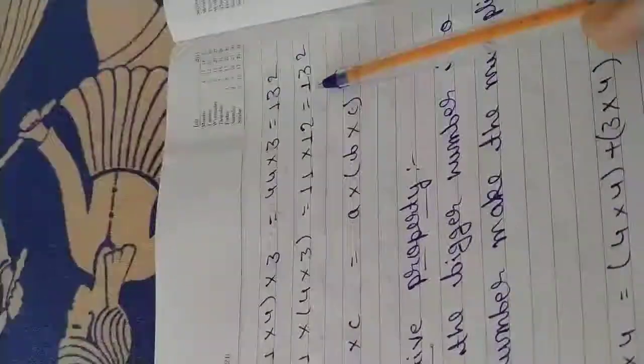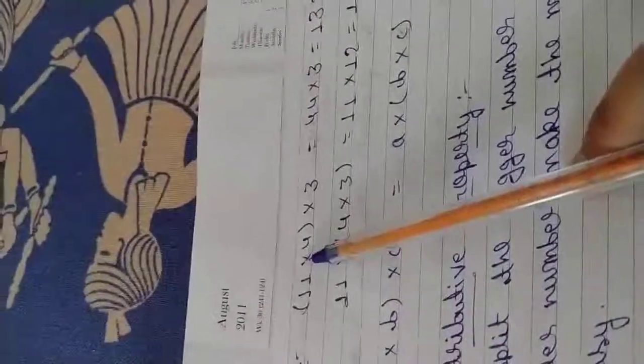The answer is the same. If we divide 4 into 3 first, the result equals a into b into c equals a into b into c. This means the answer is equal.